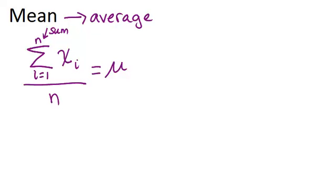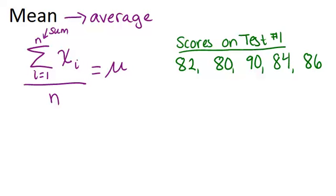Let's look at an example to get a sense for what the mean is really telling us. Here are five scores from test number one in your math class. Based on these five scores, what is the average? To figure out the average or mean, we're going to add up all five numbers and then divide by five because there are five numbers.